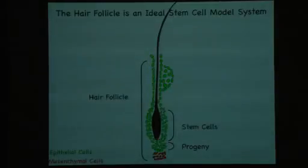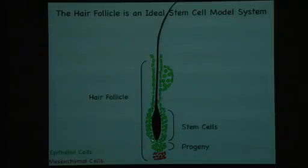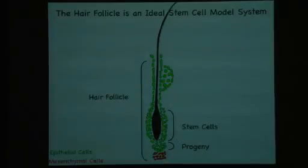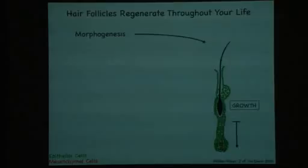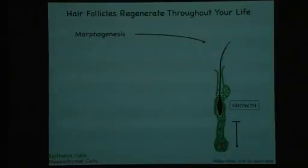In particular, at the bottom of the follicle, stem cells and their immediate progeny are located. The interaction with the mesenchyme results in the ability of the hair follicle to continuously regenerate. During morphogenesis, follicles are made in both mice and humans. What happens is that the follicle will expand downwards.